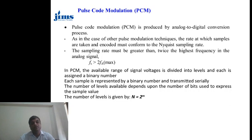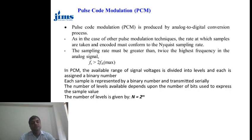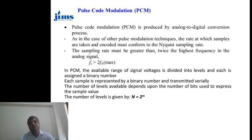In PCM, the available range of the signal voltage is divided into levels and each level is assigned a binary number. That is basically the process of converting an analog signal into a digital signal. Each sample is represented by a binary number and transmitted serially. The number of levels depends upon the number of bits used to express the sample — for example, 3-bit or 4-bit.